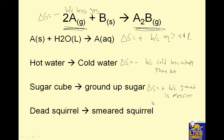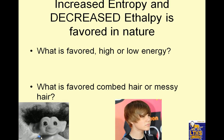Dead squirrel becomes smeared squirrel — delta S is positive because smeared is a bigger mess. Imagine having to clean up a smeared squirrel; that would be a bigger mess than just one dead one.